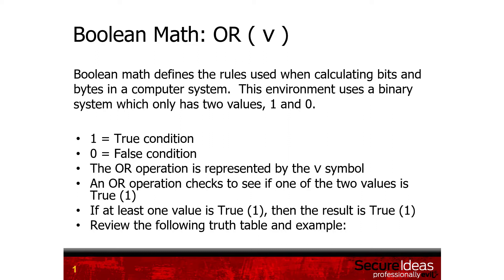To define what an OR operation does, it checks to see if one of the values is true. If at least one of the values is equal to 1, if one or both is equal to 1, then the result is also equal to 1 or the result is true.